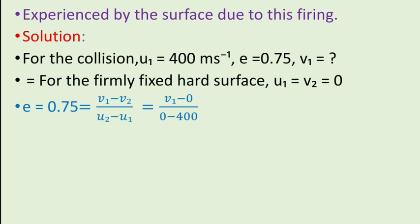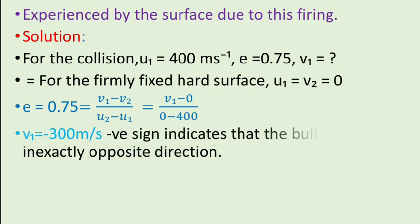Now the formula for coefficient of restitution is E is equal to V1 minus V2 divided by U2 minus U1. After substituting the given values, 0.75 is equal to V1 minus 0 divided by 0 minus 400. Therefore V1 is equal to minus 300 meter per second. This negative sign indicates that the bullet rebounds in exactly opposite direction.